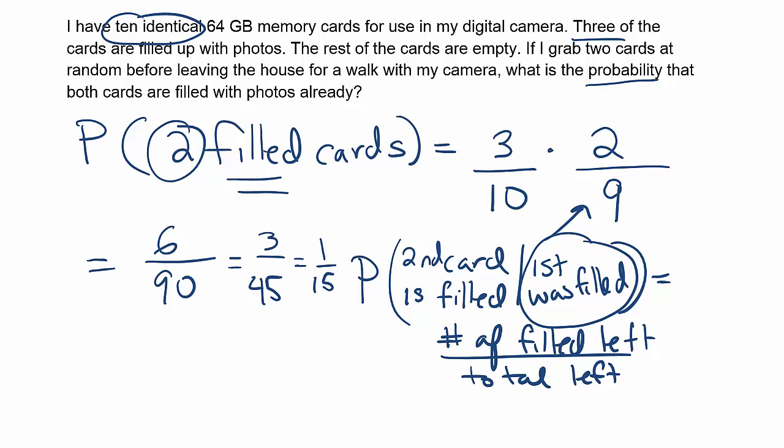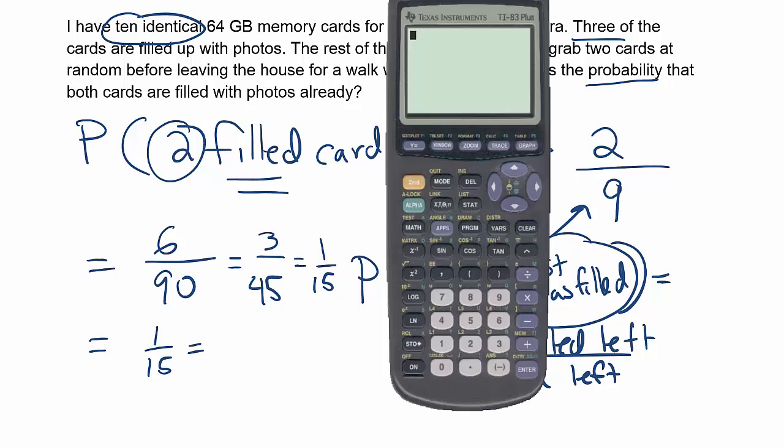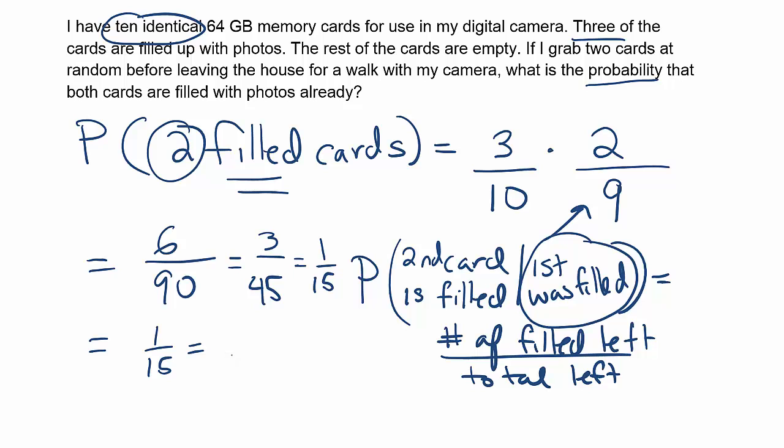Or you could just divide it right from the beginning and say six over 90 is whatever. So let's just do the division to get the decimal answer. And when we do that, we'll have our solution. What is 1/15? Well, that answer is 0.066 repeating. So we're just going to say 0.067 to get it to three decimal places. So the answer is approximately 0.067. That's an approximate answer, but that's basically it. So about a 6.7% chance that we would select two cards that are filled already.